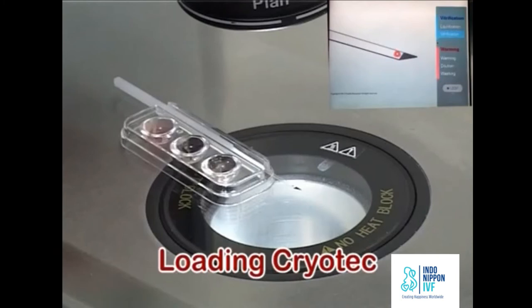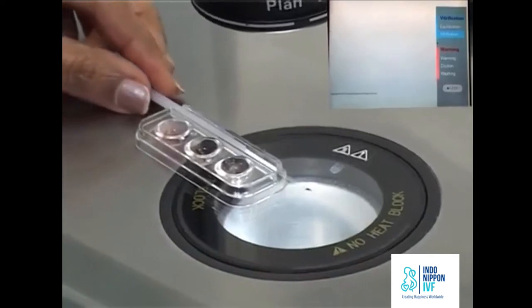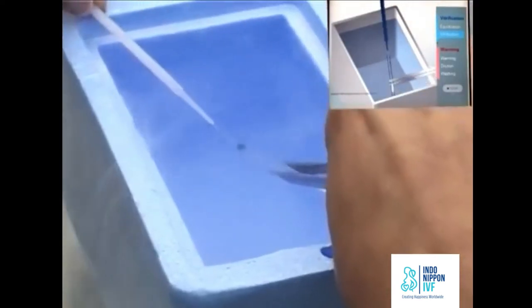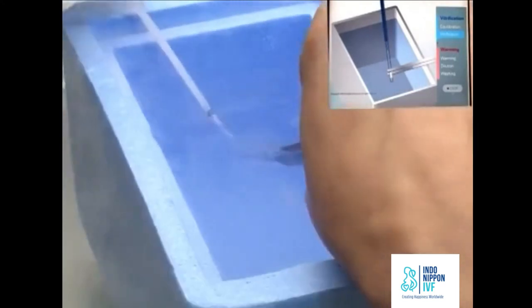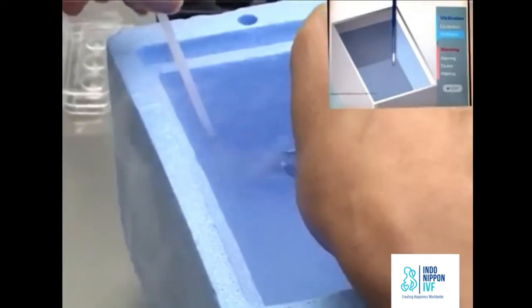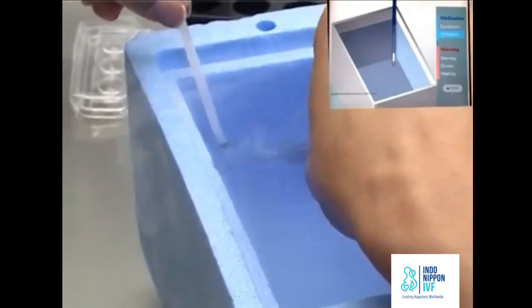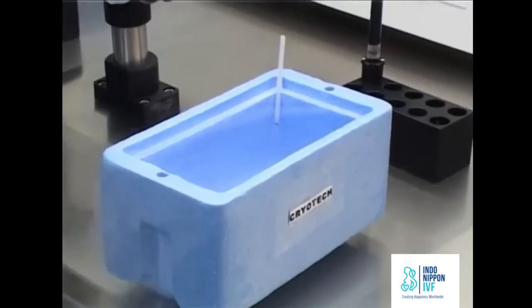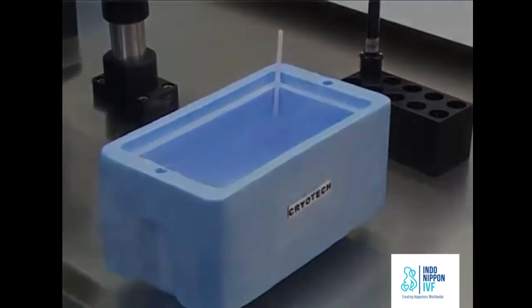One cryotech stores up to four oocytes so you can make four droplets. Immediately submerge the cryotech into fresh liquid nitrogen. Put the straw cap on cryotech in the liquid nitrogen. Ensure that the cap is fitted tightly onto the cryotech. Put the cryotech in a cane and store it in a liquid nitrogen tank. Do not expose the cryotech to air until warming.